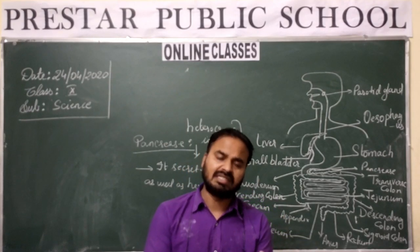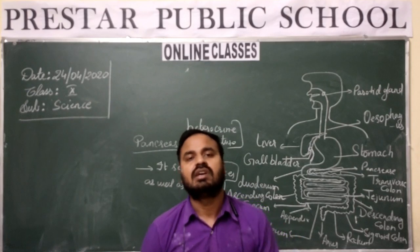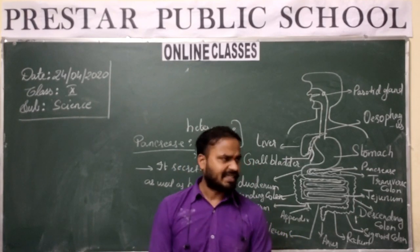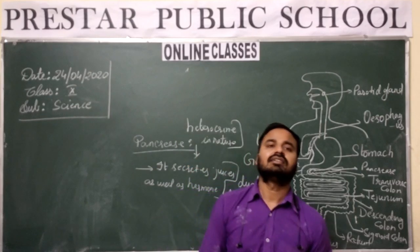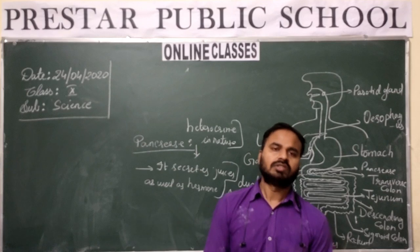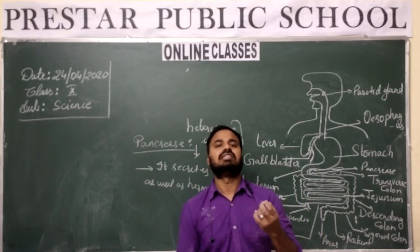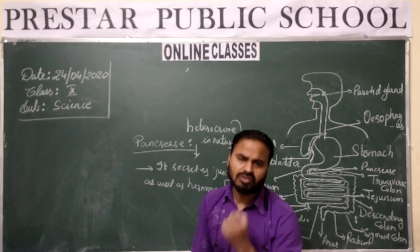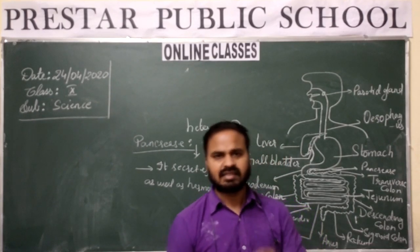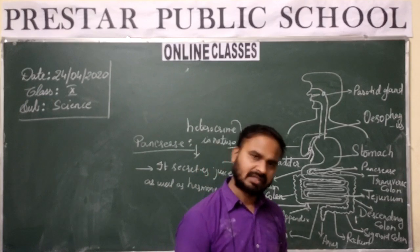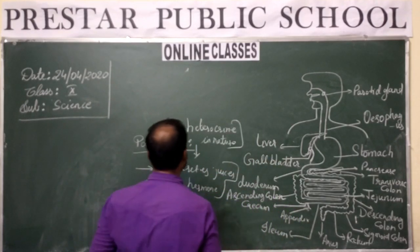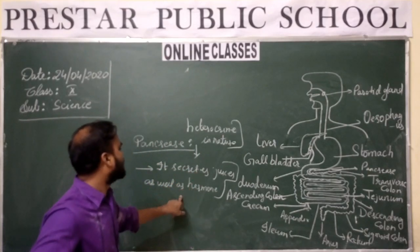Being heterocrine, it means the pancreas can secrete juices as well as hormones. Both functions exist in this gland. So it is a gland which can secrete hormones as well as juices. It secretes insulin as well as glucagon hormones, and it also secretes pancreatic juice.